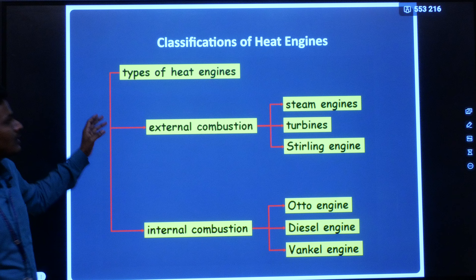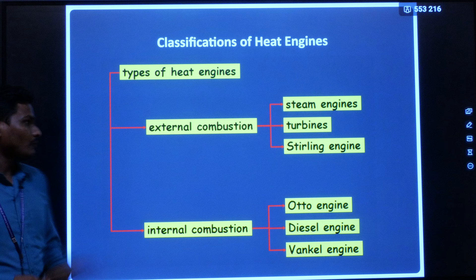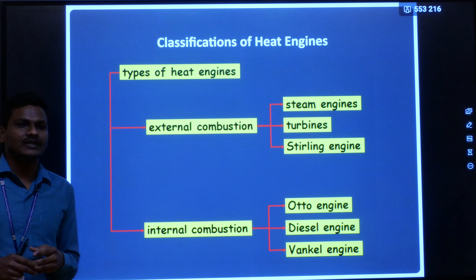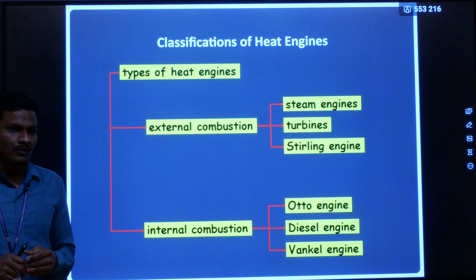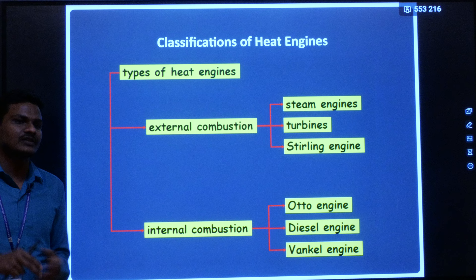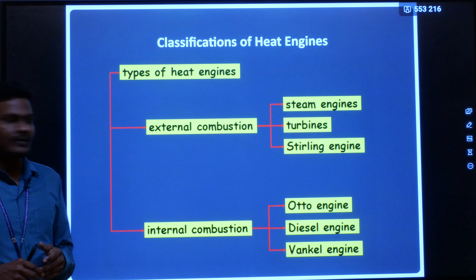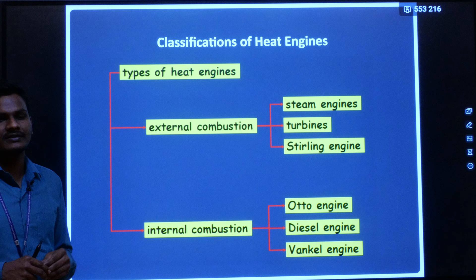We can classify heat engines into two main groups: external combustion engines and internal combustion engines. In an external combustion engine, combustion takes place outside the engine cylinder. If combustion takes place inside the engine cylinder, it is called an internal combustion engine. Examples of external combustion engines are steam engines, turbines, and Stirling engines. Internal combustion engine examples include auto engines, diesel engines, and vehicle engines.